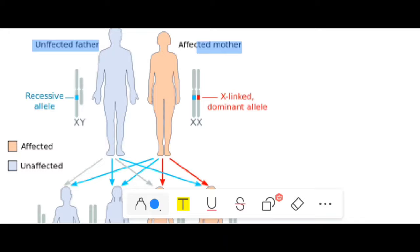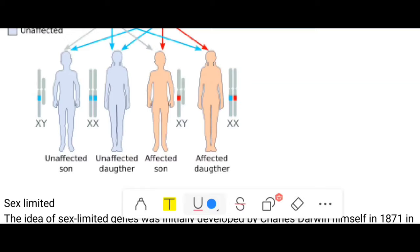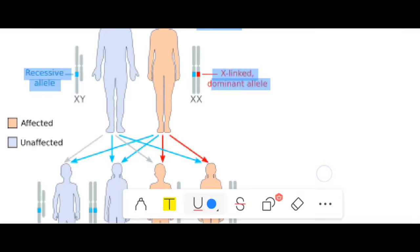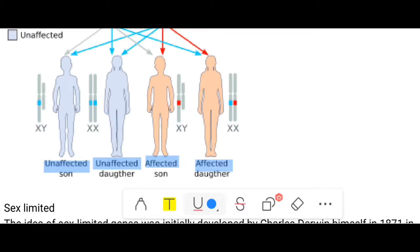In this cross example, the father carries a recessive allele and the mother has an X-linked dominant affected allele. Looking at the offspring, we observe an affected son, an affected daughter, another affected son, and an affected daughter. This case is X-linked dominant, with the dominant allele shown in red and the recessive in blue. The resulting genotypes are: XX normal, XY normal, XY affected, and XX affected daughter.